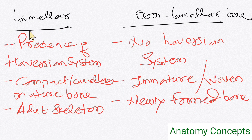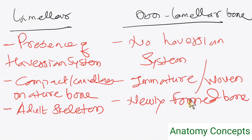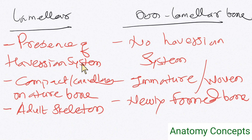In lamellar bone there is a Haversian system present, and they are compact bones. In non-lamellar or woven bone, there is no Haversian system — collagen fibers are randomly arranged with no lamellae formed, making it an immature bone. Compact and cancellous bones are both mature lamellar bones; what determines whether a bone is compact or cancellous is how the Haversian system is organized. The adult skeleton generally has a lamellar pattern.